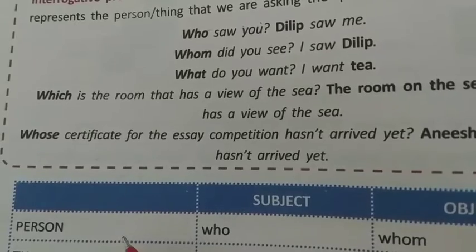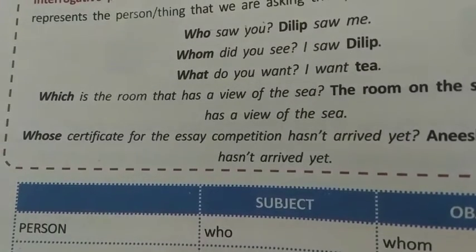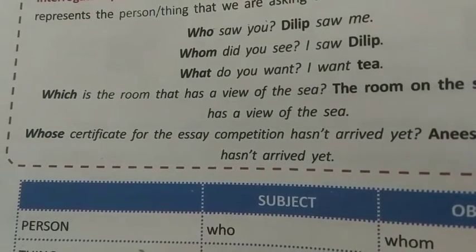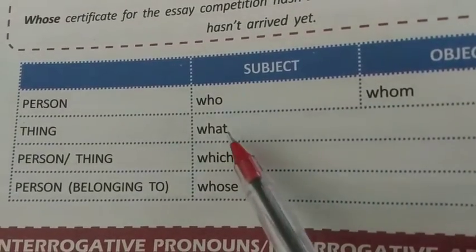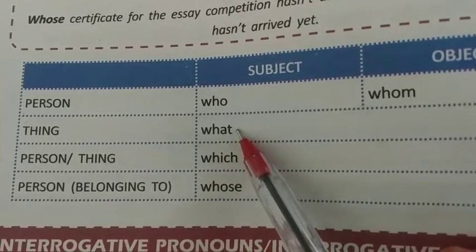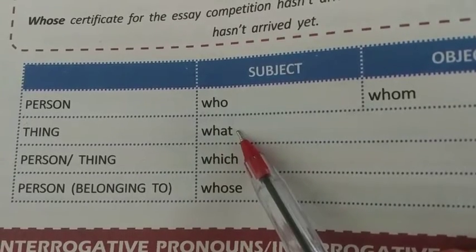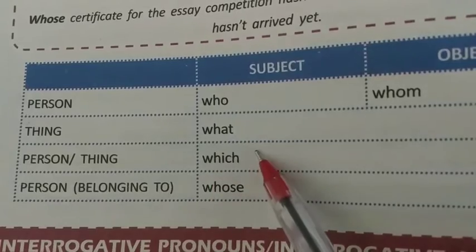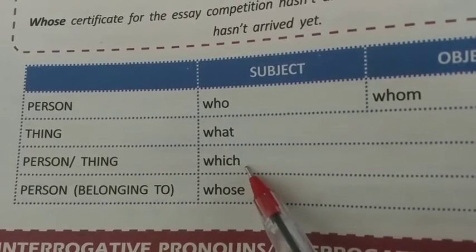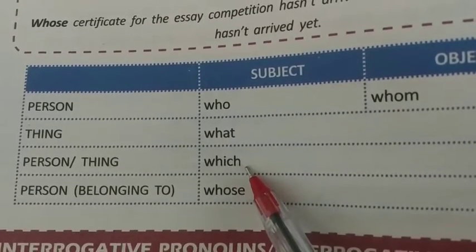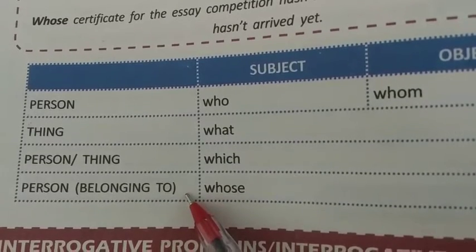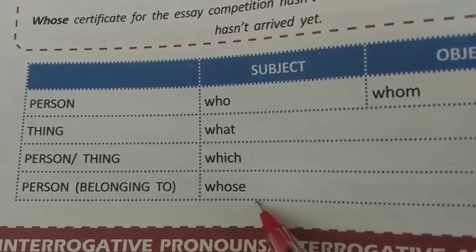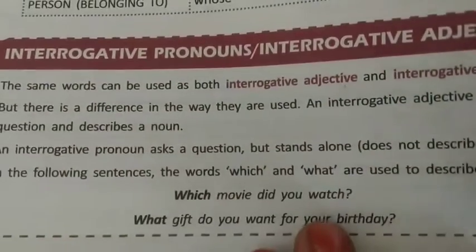तो हमारे interrogative pronouns जो person को indicate करते हैं, उनके लिए हम who और whom का यूज करते हैं। Things के लिए हम what का यूज करते हैं। Person या things के बारे में पूछने के लिए which का यूज करते हैं। और person belonging का relation दिखाने के लिए whose का यूज करते हैं।